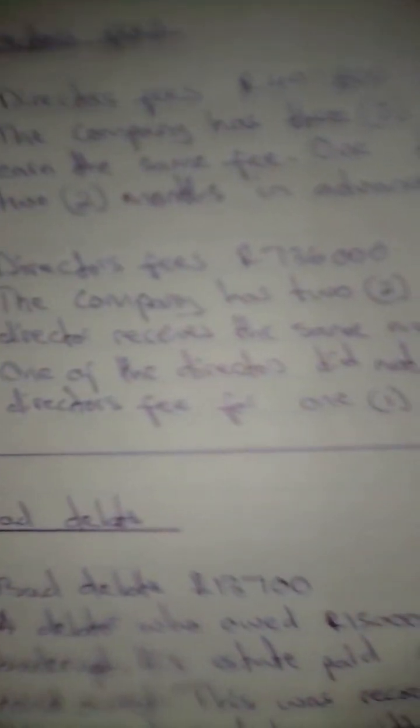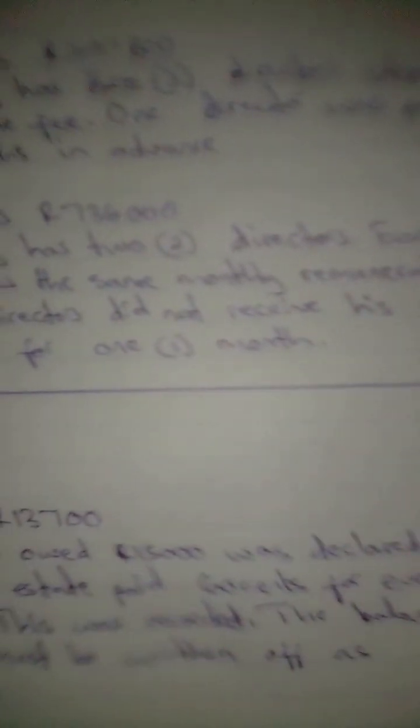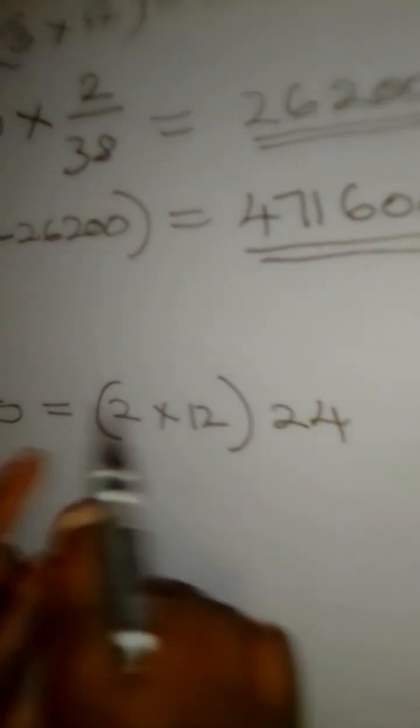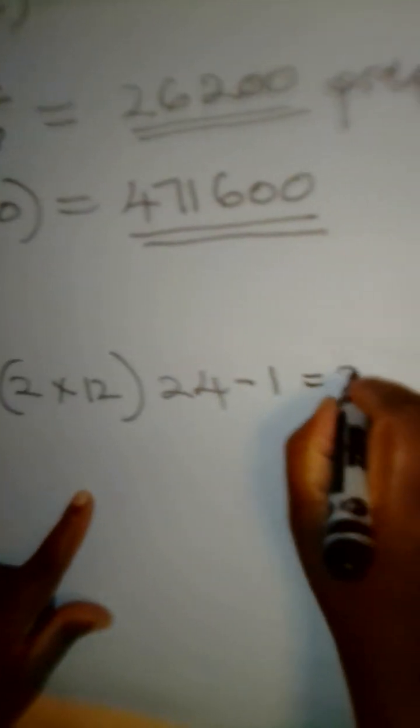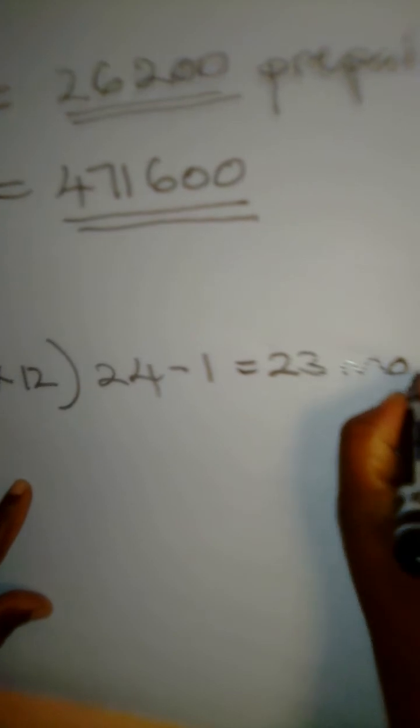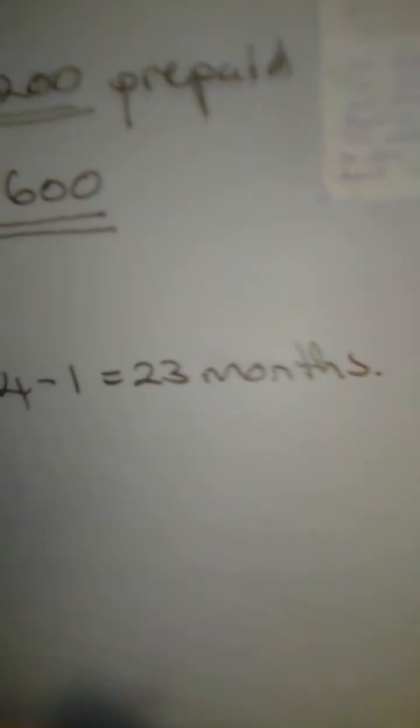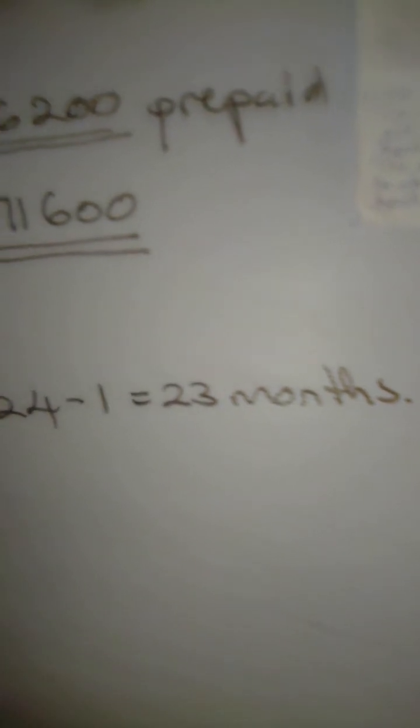But here they said, one of the directors did not receive this director's fee for one month. So to mean that this money is not for 24 months but it's for how many months? 24 minus one month, which is equal to 23 months. The money is for 23 months because one of the directors did not receive money for one month.